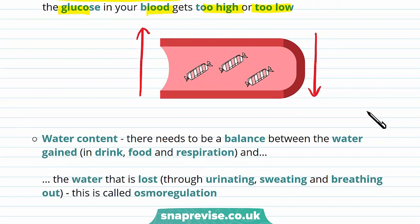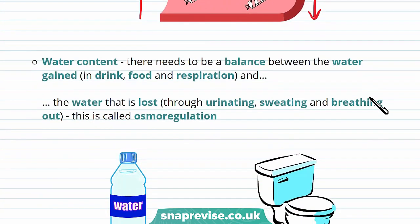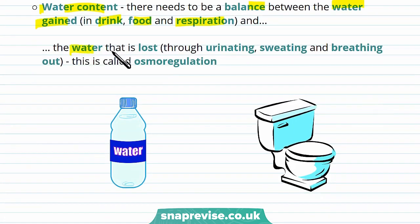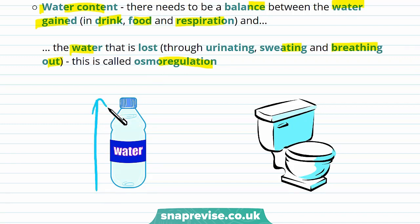Another thing that needs to be kept constant is water content. There needs to be a balance between the water gained in drink, food and respiration, and the water that is lost through urinating, sweating and breathing out. This is called osmoregulation. For instance, if you take in a lot of water, you'll also need to release a lot of water.